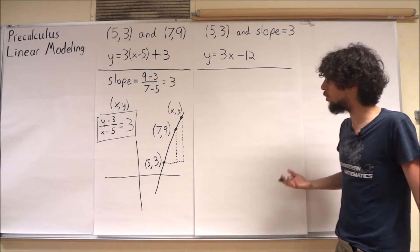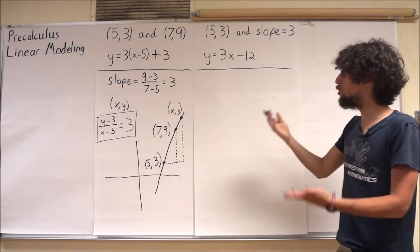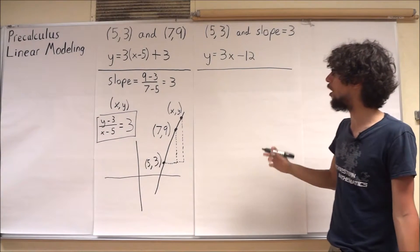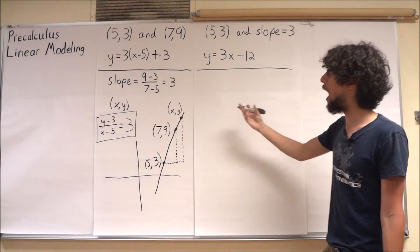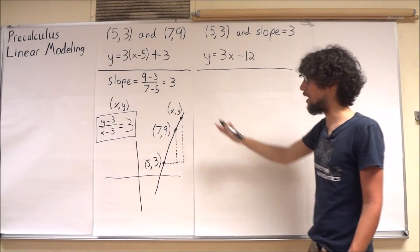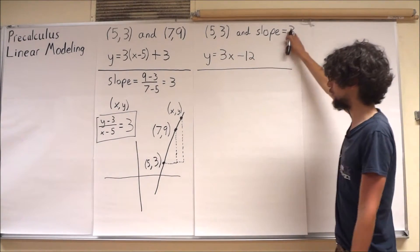Now, we say okay, I know that if I choose some other point x, y on the line, and I compute the rise and run between 5, 3 and x, y, I'll find that the slope is equal to 3.